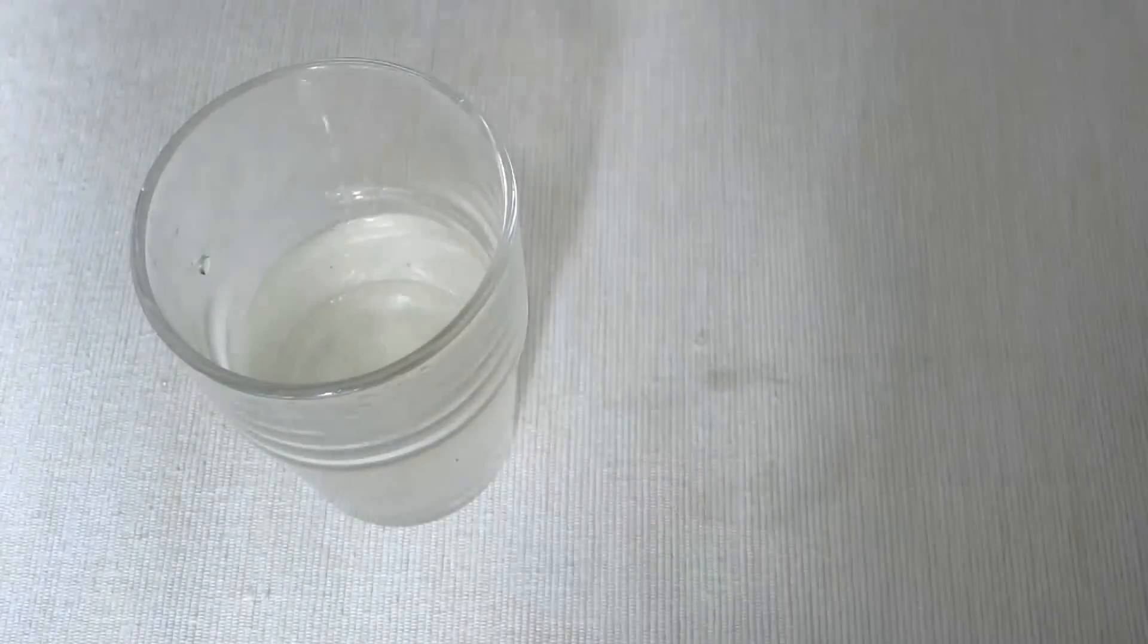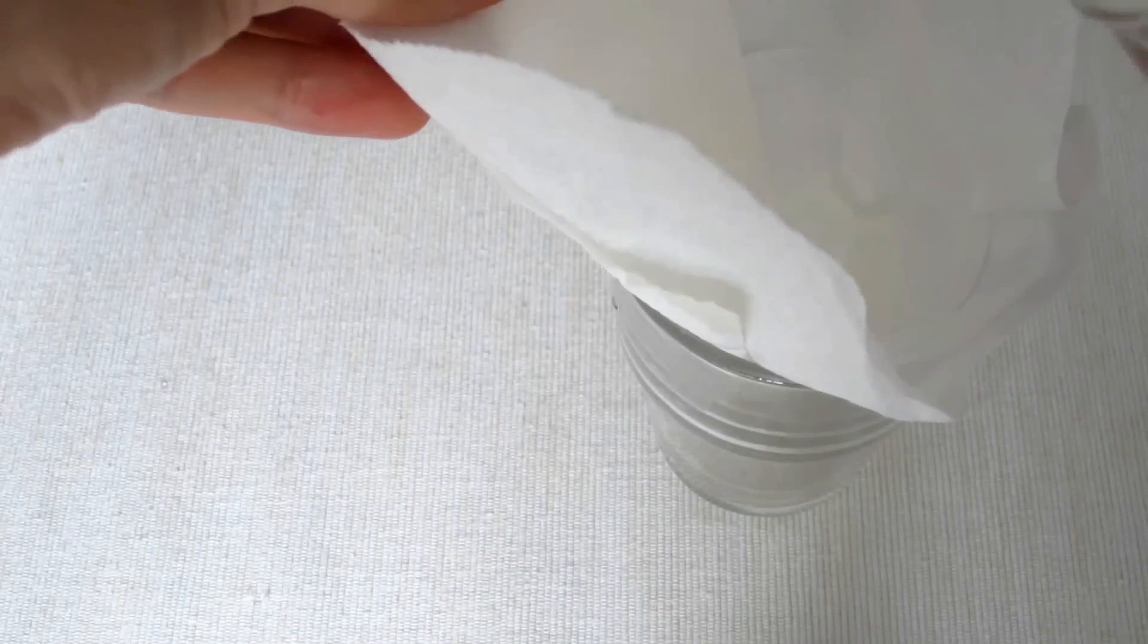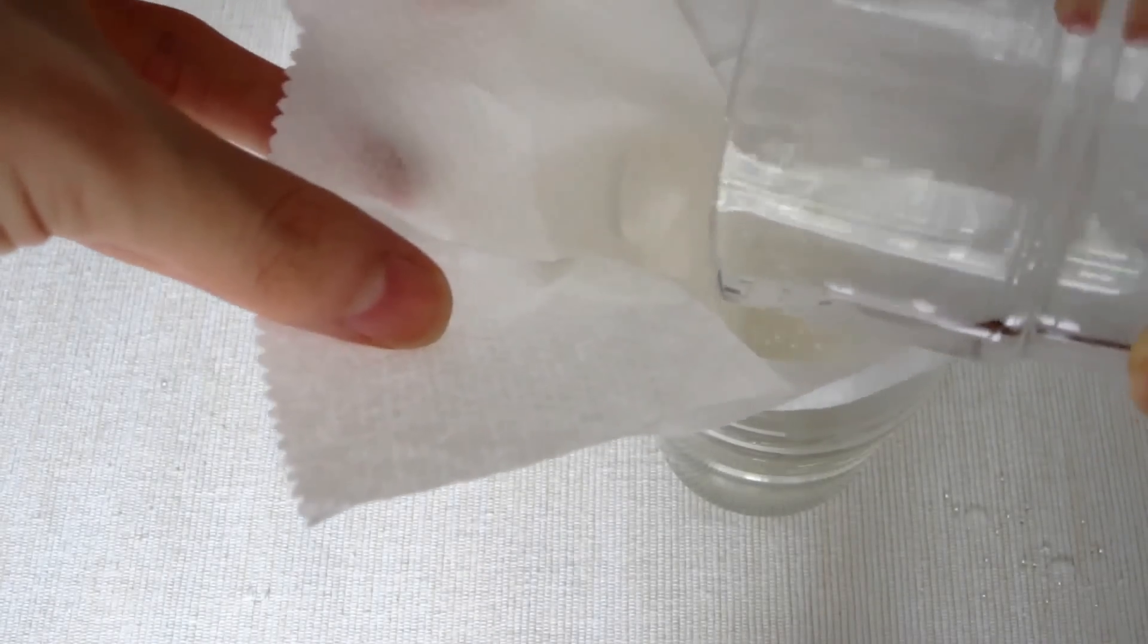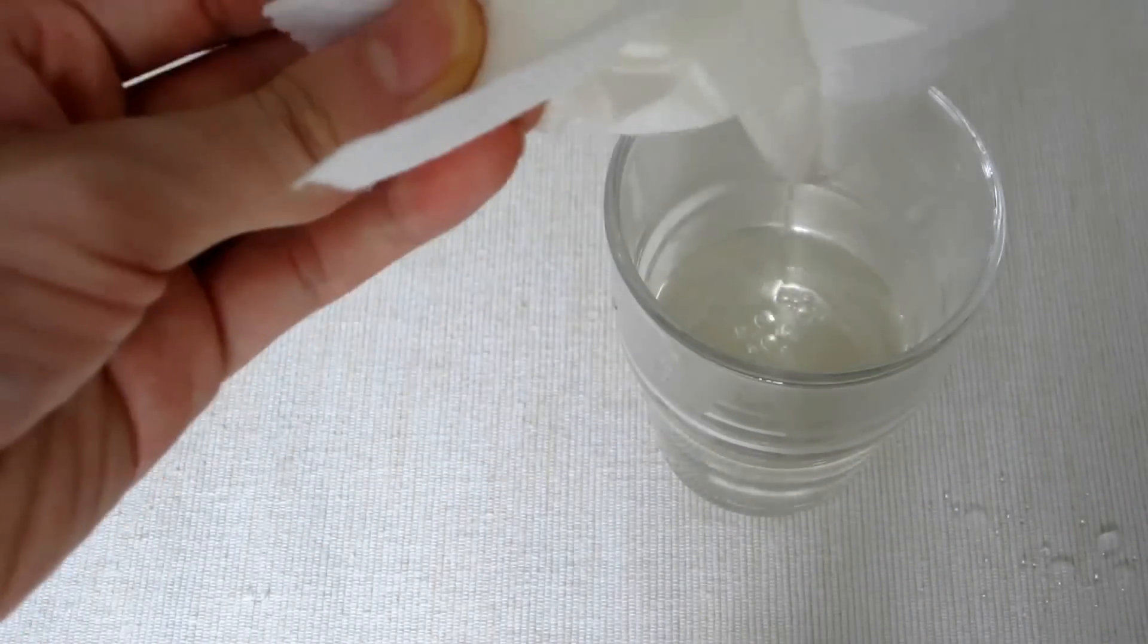Filter the solution in order to filter out dust, insoluble substances and excess alum. You can use filter paper and funnel. If you don't have filter paper, you can use multifold towel paper.